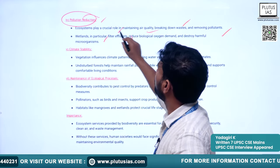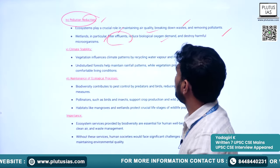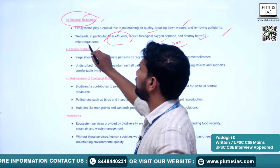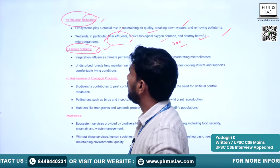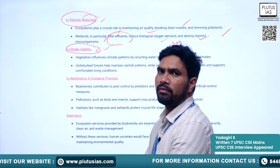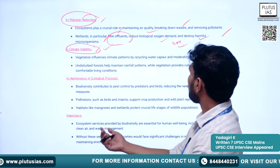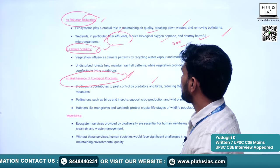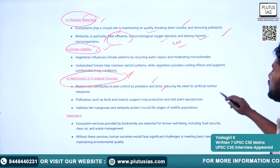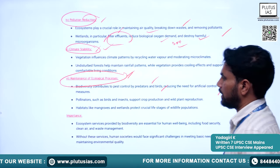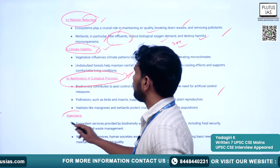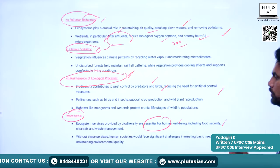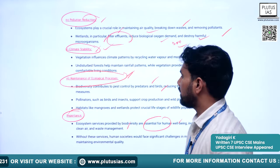Further ecosystem services include: nutrient storage and recycling; pollution reduction — ecosystems maintain air quality, break down waste, and remove pollutants; wetlands filter effluents, reduce biological oxygen demand (BOD), and destroy harmful microorganisms; climate stability — biodiversity helps stabilize the climate; and maintenance of ecological processes — biodiversity contributes to pest control by predators and birds, reducing the need for artificial control measures.